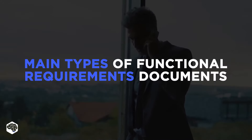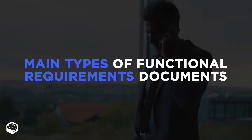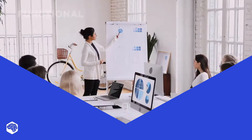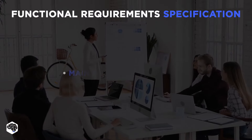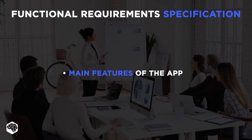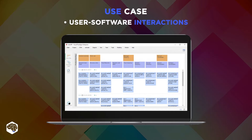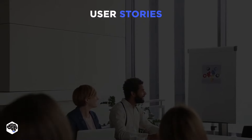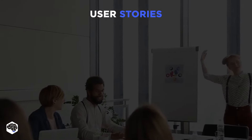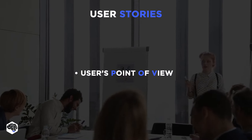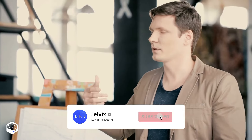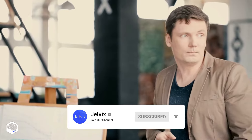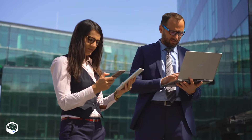What are the main types of functional requirements documents? To describe all the requirements, our team always creates a functional requirements specification document that collects all the main features of the application. A use case document describes user-software interactions in a generalized, impartial way. A user stories document goes through the same situations but from the user's point of view. After making user stories documents, sometimes we discover that some use cases weren't necessary at all.